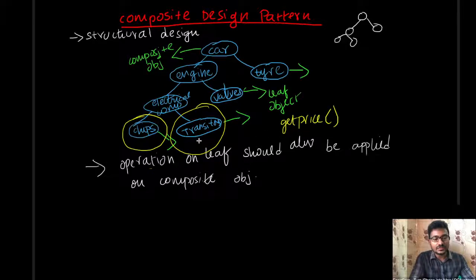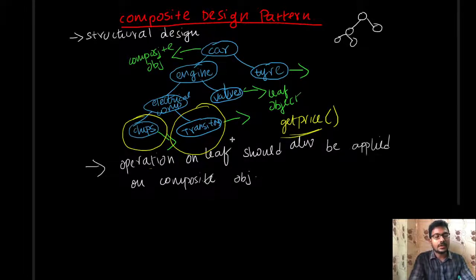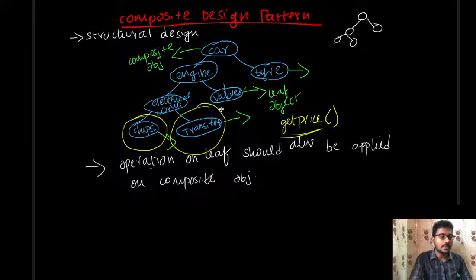The get price method will apply to the transistor object, the chips object, the valves, the tires, and the price. If you apply get price throughout, it applies to all leaves and composite objects — get price of transistor, get price of chips, get price of electrical components, get price of car. So the get price method can be applied on all objects, whether leaf or composite. This is the second rule.